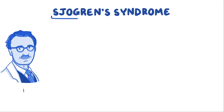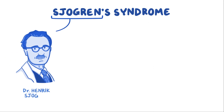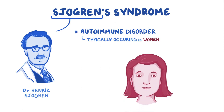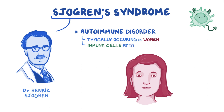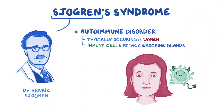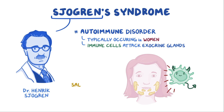Sjogren's syndrome, named after Dr. Henrik Sjogren who first identified it, is a common autoimmune disorder typically happening in women. In Sjogren's syndrome, the body's immune cells go rogue and start attacking various exocrine glands, which are glands that pour their secretions into a duct, most commonly the salivary glands and the lacrimal or tear glands.